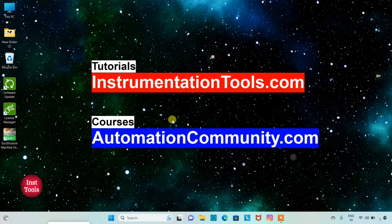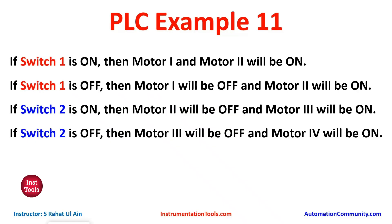Let's look at Example 11. If switch 1 is on, then motor 1 and motor 2 will be on. If switch 1 is off, then motor 1 will be off and motor 2 will be on. If switch 2 is on, then motor 2 will be off and motor 3 will be on. And if switch 2 is off, then motor 3 will be off and motor 4 will be on. In this case, we will be using latching and also normally closed contacts.